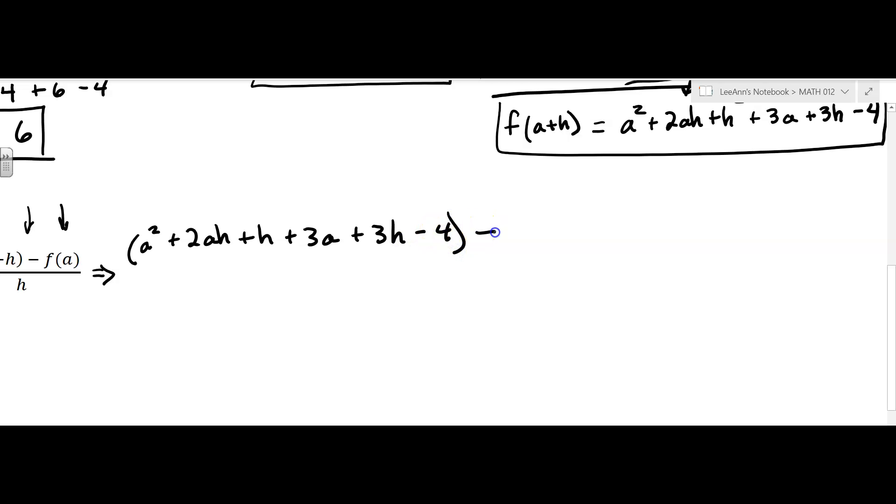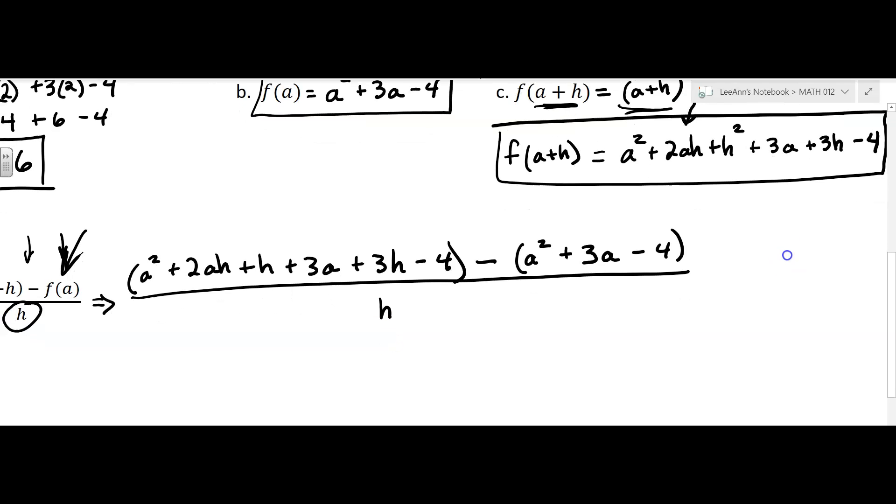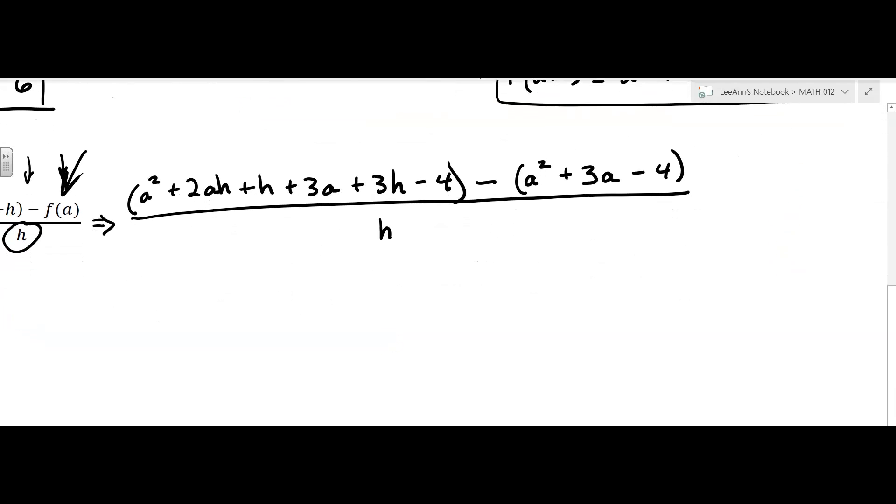Then we're going to subtract. Now we have to find f of a. So that's that part right there. And we've got f of a. That was in part B. Don't forget to put parentheses here because you've got to subtract the whole thing. And then that whole thing is just divided by a plain h. It's not f of h. It's just h. And like I said, we use this later on. So it's just practicing now. So lots of paper for this one.